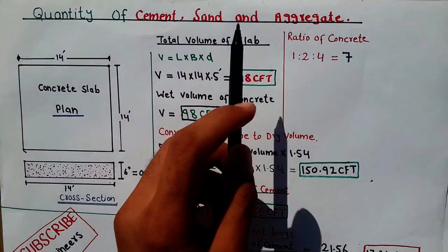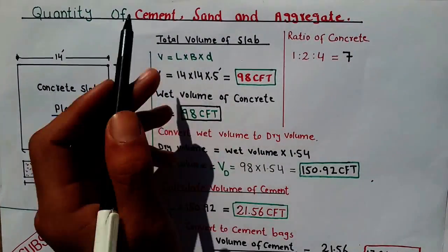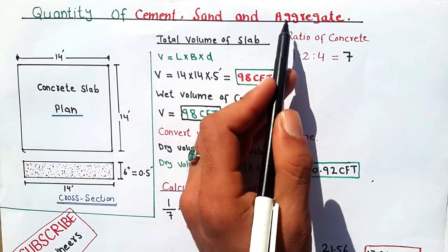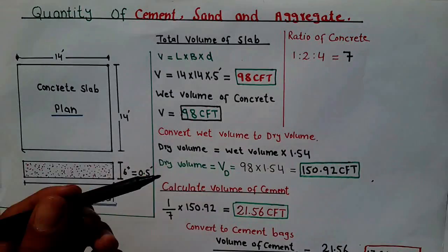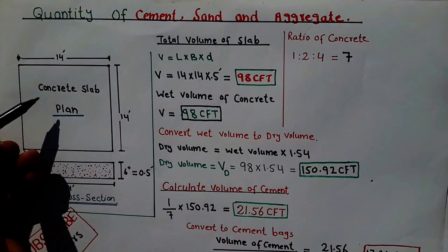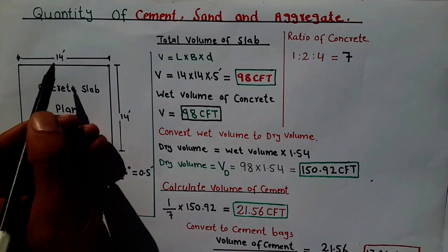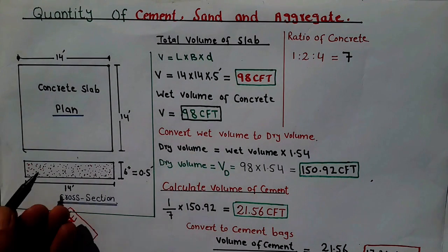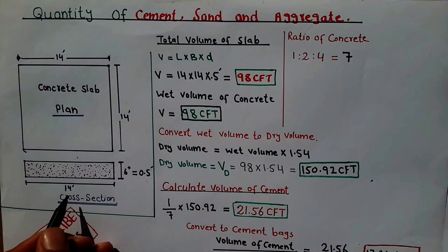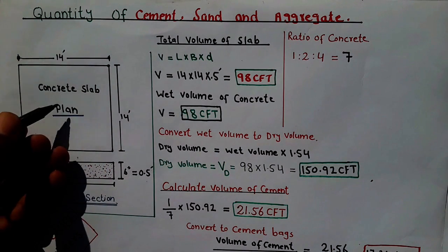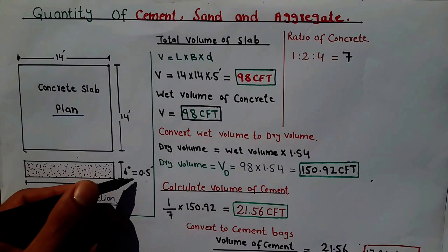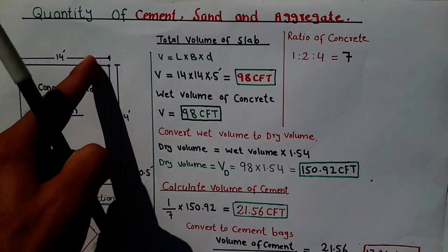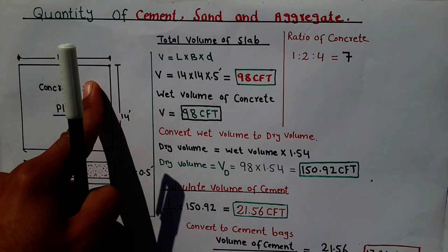Hello friends, I am Sami and today my topic is about the quantity of cement, sand, and aggregate. For this I draw a sketch for a concrete slab which length is 14 feet, breadth is also 14 feet. This is the cross section of this slab, which length is 14 feet same like this one, and the depth of the slab is 6 inches, which is equal to 0.5 feet.